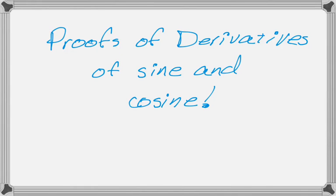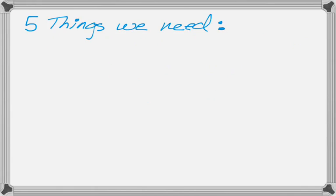Let's see if we can prove the derivatives of sine and cosine. To do that, we're going to need to know five things. You already know them, but we're going to have to keep track of them. The first one is, at some point, we're going to need the sum formula for sine.